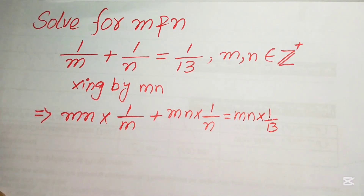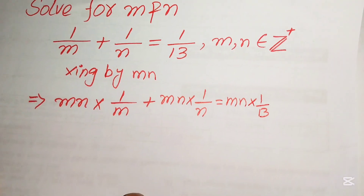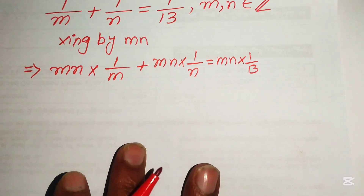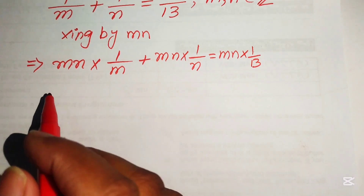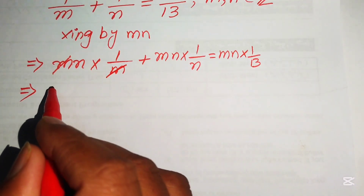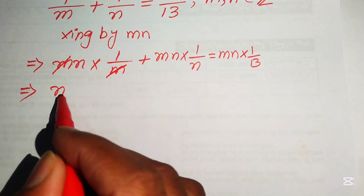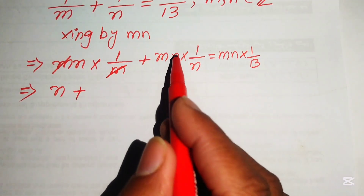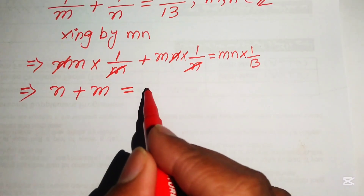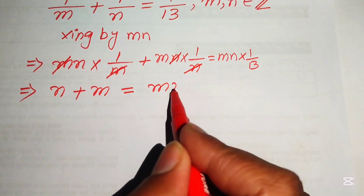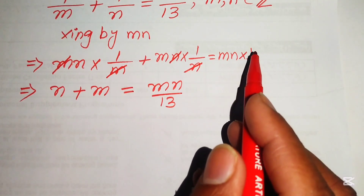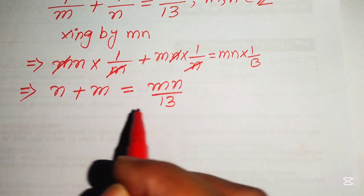After this step we simplify: the m cancels out and we get n; the n cancels out and we get m. So we have n plus m equals mn divided by 13.